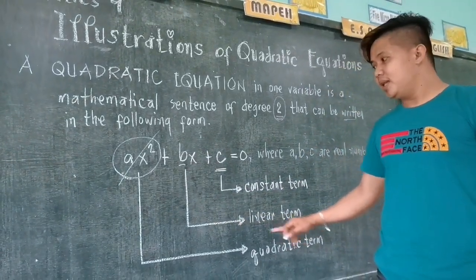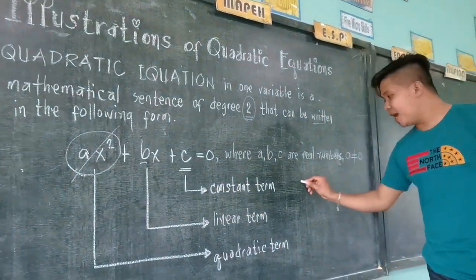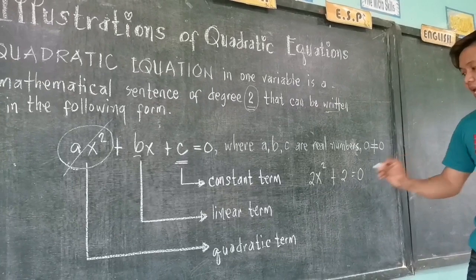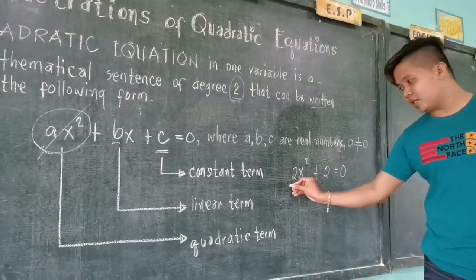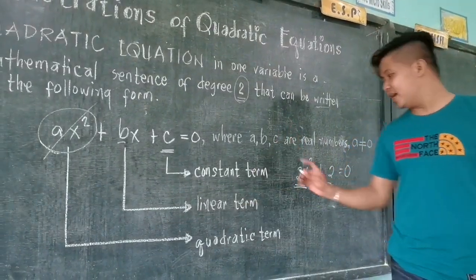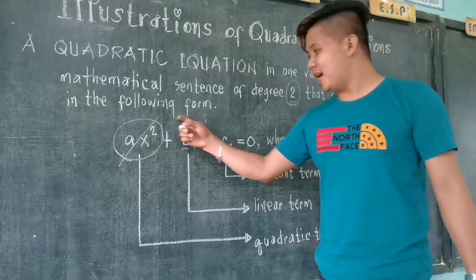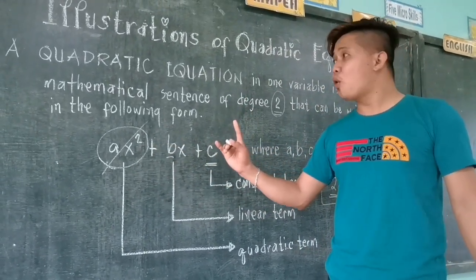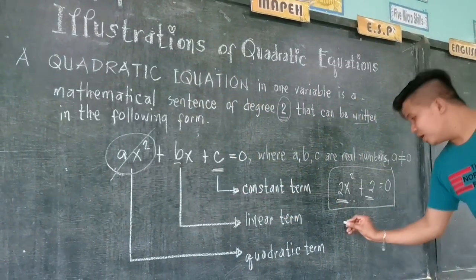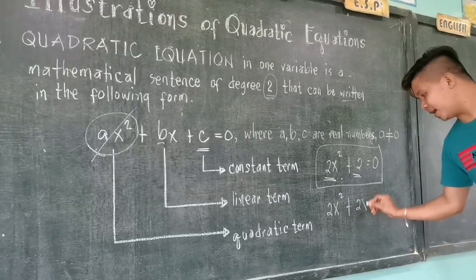The next term is the linear term, and c is called the constant term. For example, if we have 2x squared plus 2 equals zero, this is the quadratic term and this is the constant term — there is no linear term. Still, this is an example of a quadratic equation. Even though the b term is not present, we can still call it a quadratic equation. What if c is not around? For example, 2x squared plus 2x equals zero.